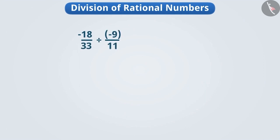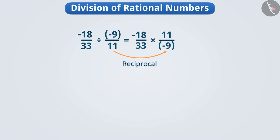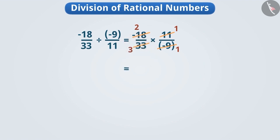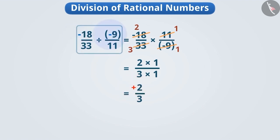If we want to divide two negative rational numbers, like minus eighteen by thirty-three divided by minus nine by eleven, we keep the first number minus eighteen by thirty-three as it is and multiply it by the reciprocal of minus nine by eleven, which is eleven by minus nine. Since minus eighteen is two times minus nine, we cancel minus nine and write one, and write two instead of minus eighteen. Thirty-three is three times eleven, so we cancel eleven and write one, and cancel thirty-three and write three. We get the result two by three, which is a positive number. Therefore, the result of the division of two negative numbers is positive.